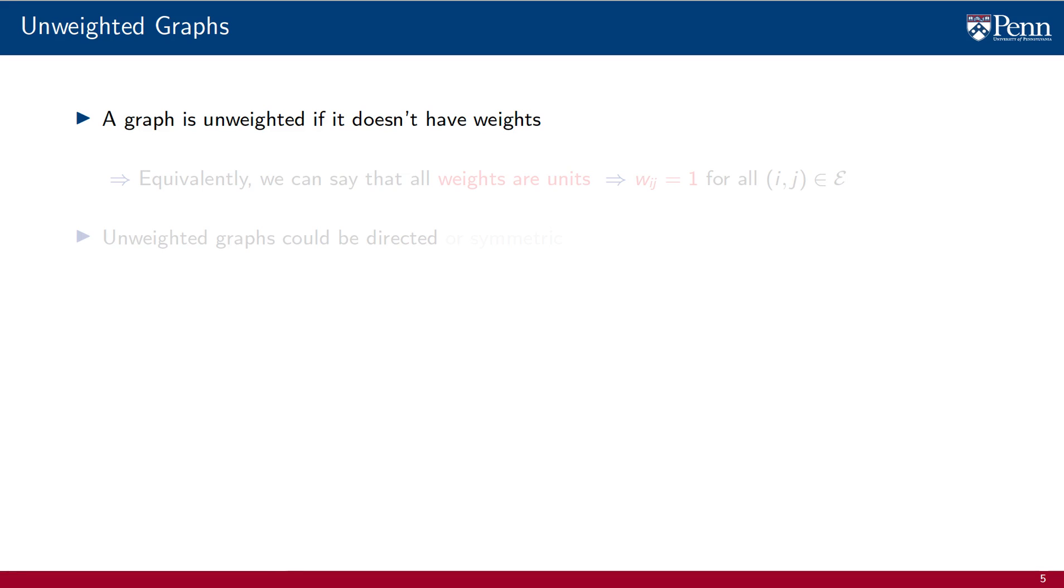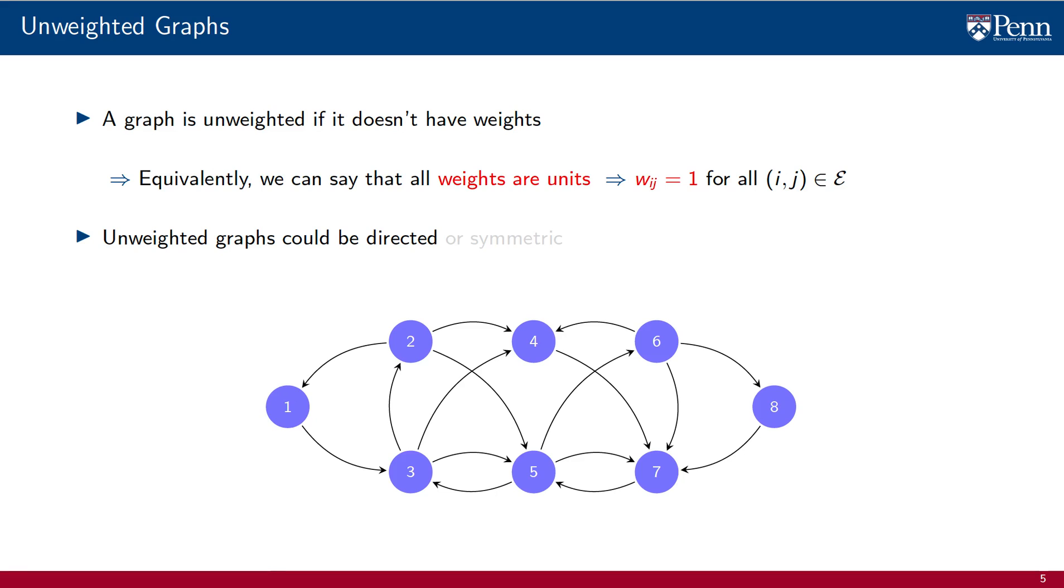Weights are not always necessary. When a graph doesn't have weights, we say that it is unweighted. Sometimes it is convenient to equivalently interpret an unweighted graph as one in which the weights are units. That is, one in which w(i, j) is 1 for all edges in the edge set. Unweighted graphs can also be directed, as the one we are showing below, or undirected or symmetric, as the one we are showing now.